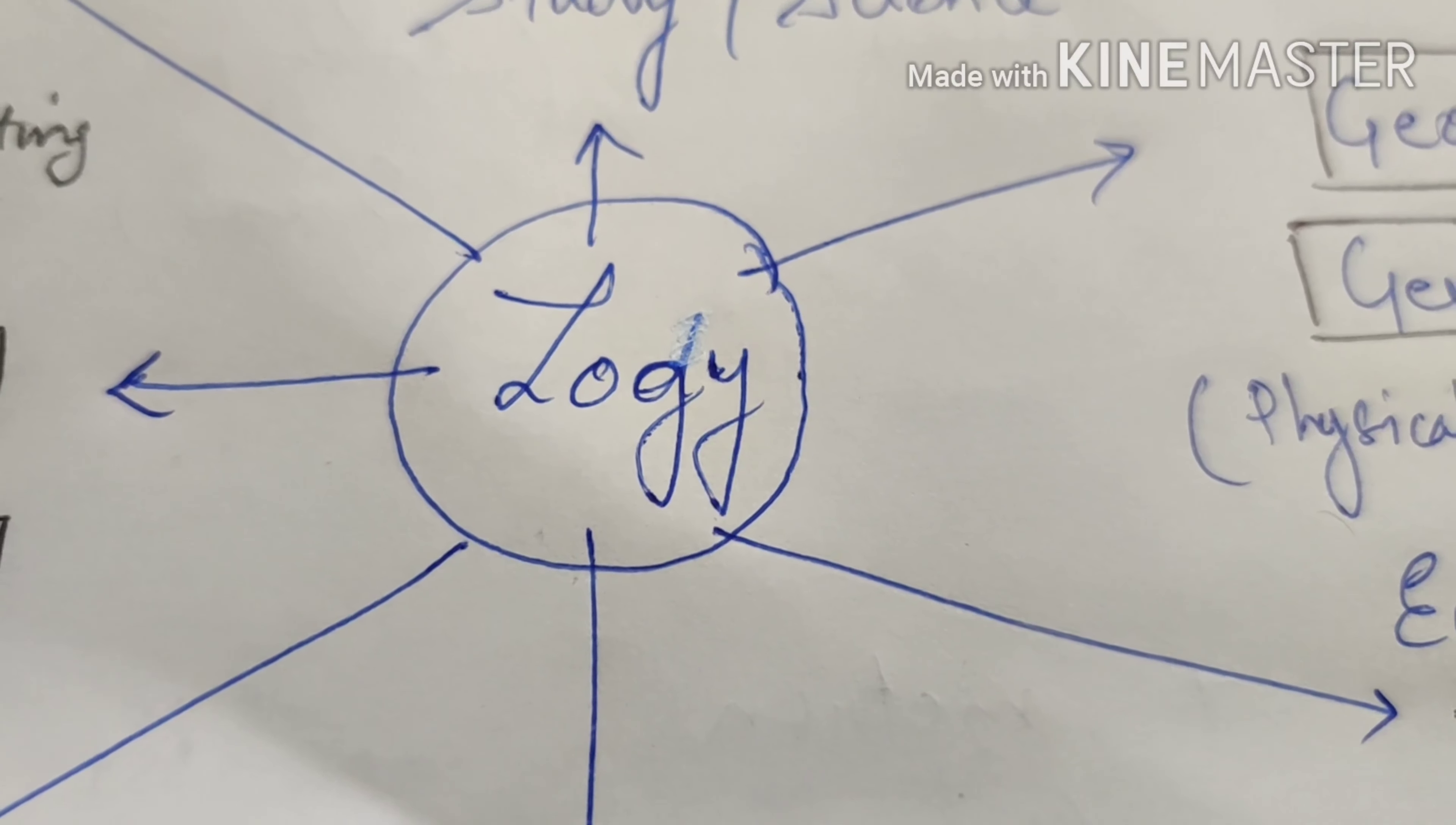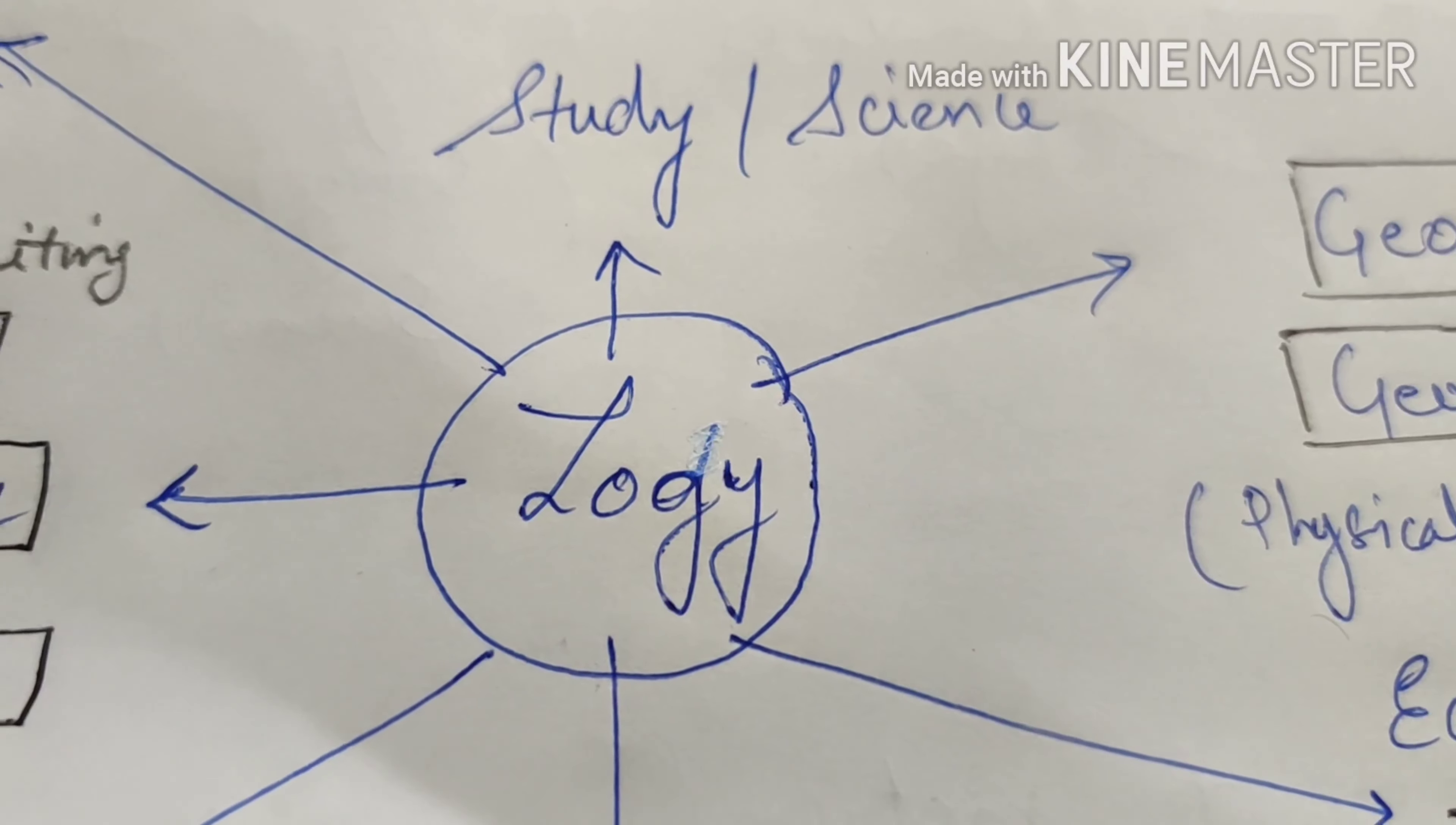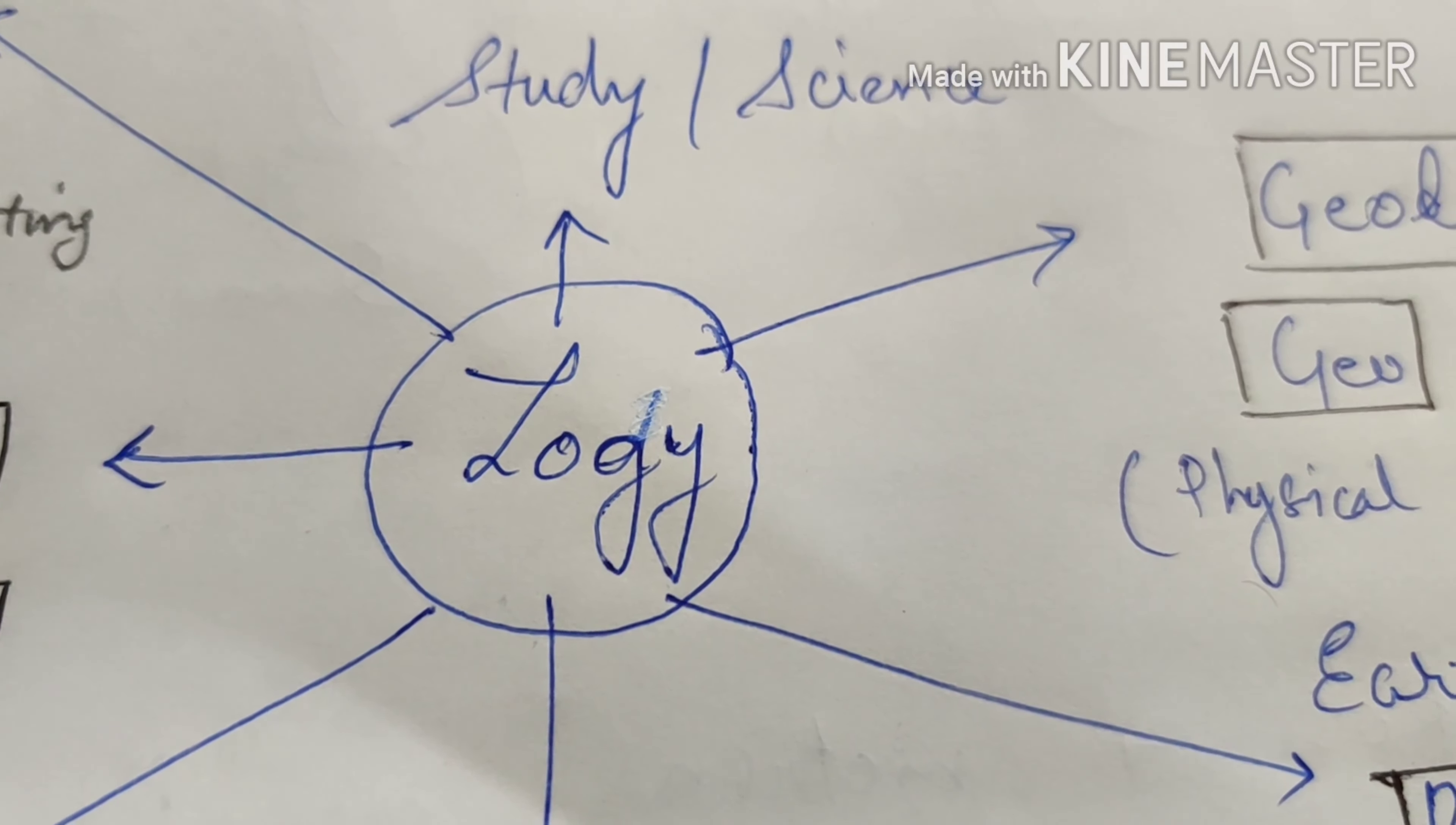The first word root we are covering is logi. Logi refers to study, science or sometimes it even refers to words or language. Logi has a Latin word as logos, l-o-g-o-s.